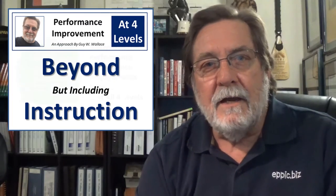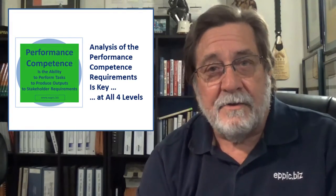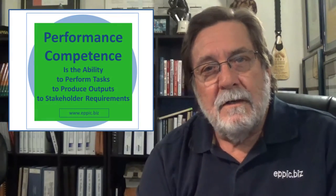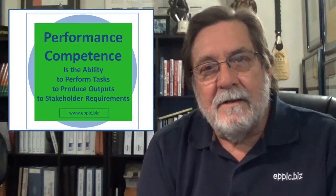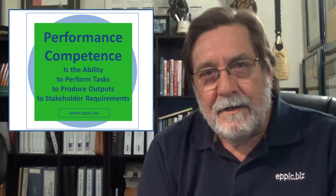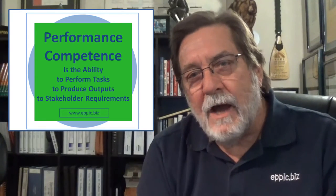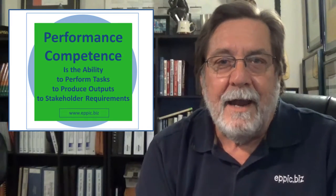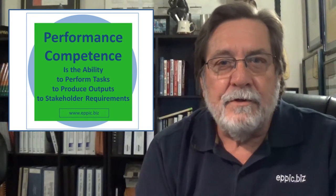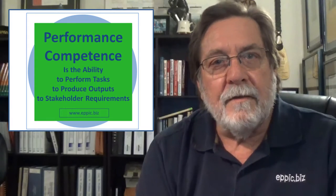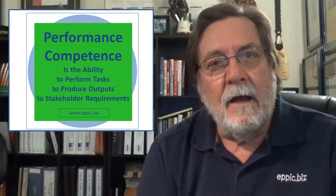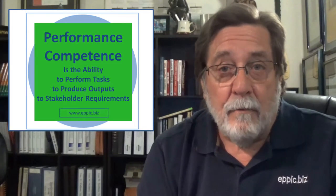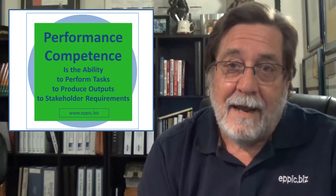What's key here is analysis — analysis at all four levels of the performance competence requirements. Performance competence is, as the graphic says, the ability to perform tasks to produce outputs to stakeholder requirements. You've got to know all three elements: what are the outputs being produced, what are the tasks performed to produce those outputs, and what do the stakeholders require regarding both the outputs and the process tasks?